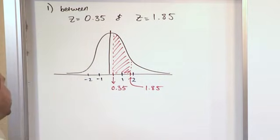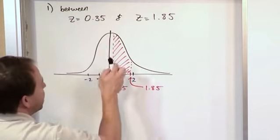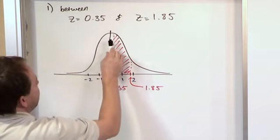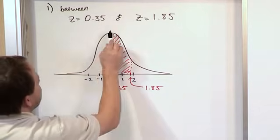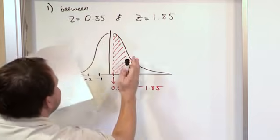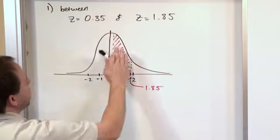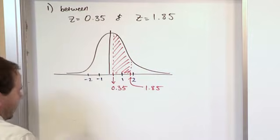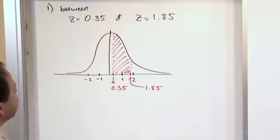Now if I subtract from that the answer I get from the table from this number, if I were to get this area, it would be only the area from here to negative infinity. So if I subtract those two answers I get from the table, I'm going to be left with this guy right here. And that's essentially what you have to do when you try to find